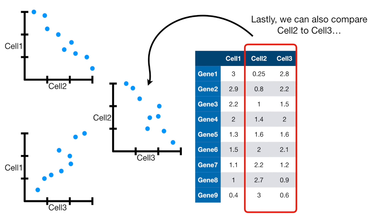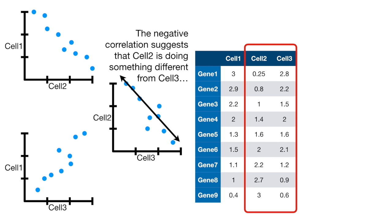Lastly, we can also compare cell 2 to cell 3. The negative correlation suggests that cell 2 is doing something different from cell 3.